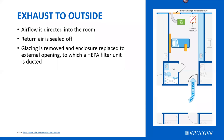Another option is exhausting directly to the outdoors. Many hospitals don't have operable windows, but engineers are willing to remove a window panel to make this happen. In one example, the glazing is removed and replaced with a sealed enclosure that provides an opening for the exhaust duct to ventilate directly outside. The return air is sealed off, and the exhaust duct penetrates to the outside space through this enclosure.